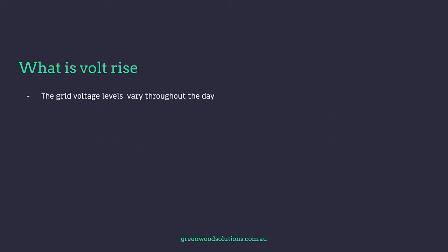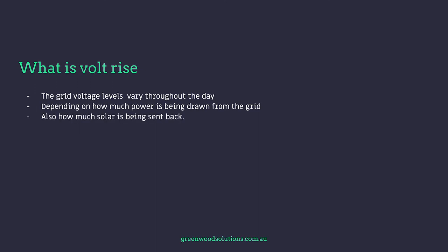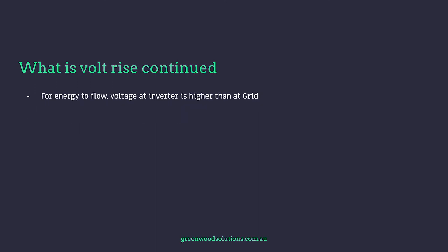The grid voltage levels vary throughout the day depending on how much power is being drawn from the grid, and also how much solar is being sent back to the grid. For energy to flow, the voltage at the inverter must be higher than at the grid, and issues can occur when cables haven't been sized correctly.